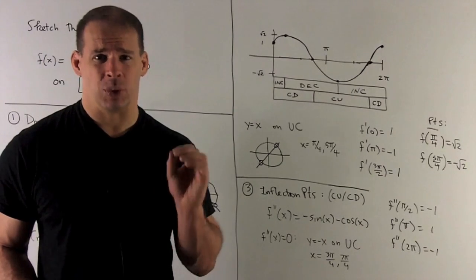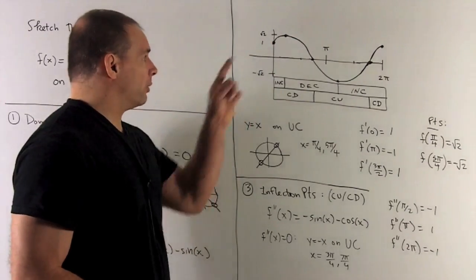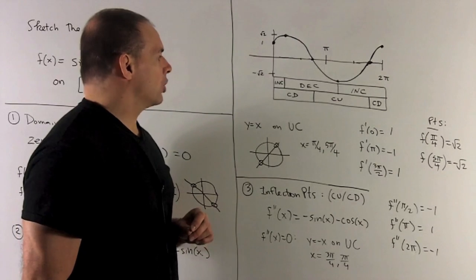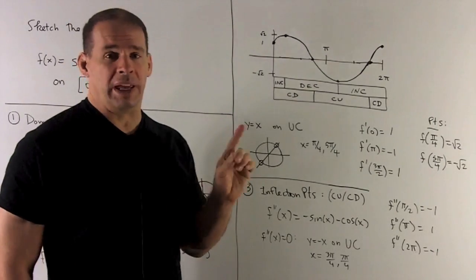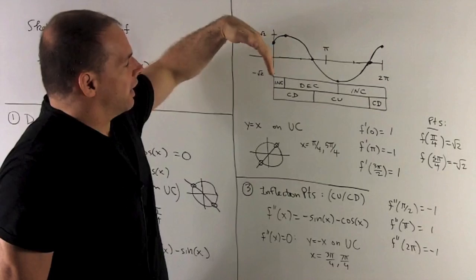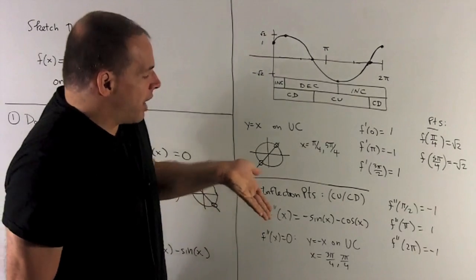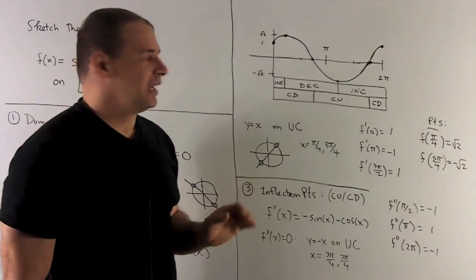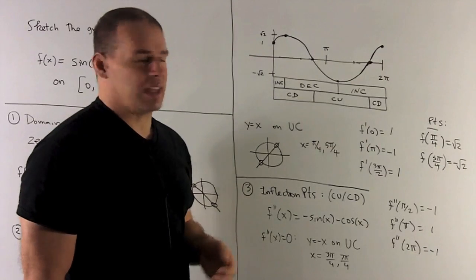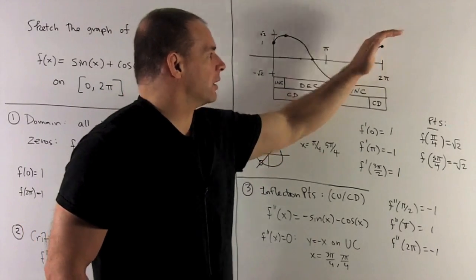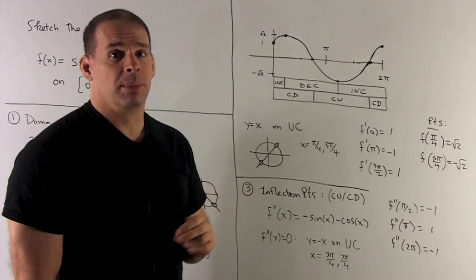Now we connect the dots through each region. Starting at (0, 1), we're increasing and concave down up to (π/4, √2). Then decreasing and concave down through 3π/4. Then decreasing and concave up. Then increasing and concave up through (5π/4, -√2) and 7π/4. Finally, increasing and concave down back to the endpoint at (2π, 1). That's the complete graph of sin(x) + cos(x).